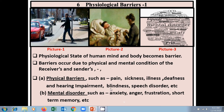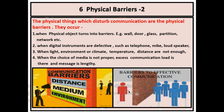Now let us see barrier number two, that is physical barriers. What are physical barriers? The physical things which disturb communication are called physical barriers. They occur when physical objects turn into barriers — such as a wall, door, or glass partition, and network issues.